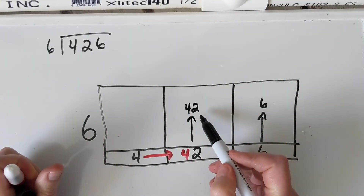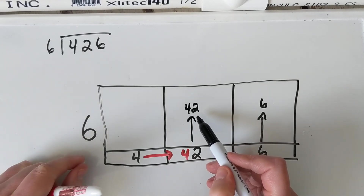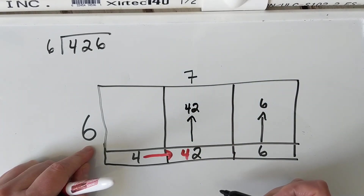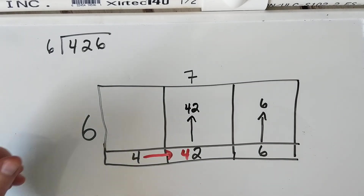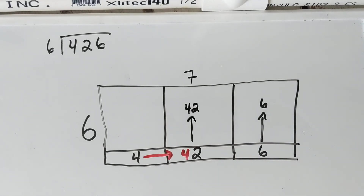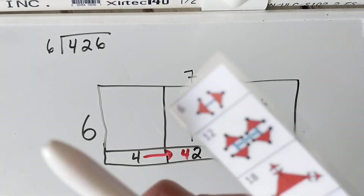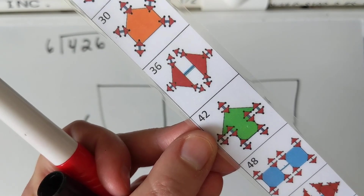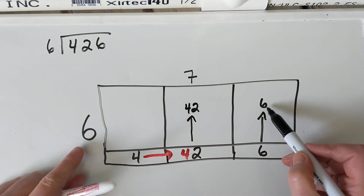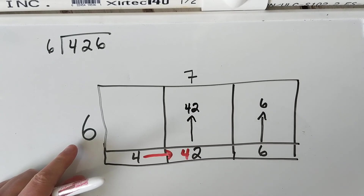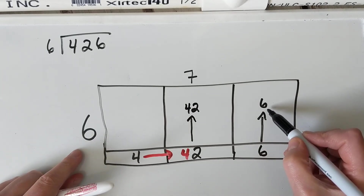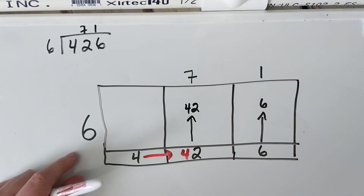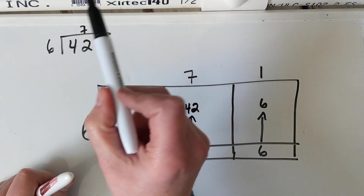Now I can go back and say: forty two — six times what gives me 42? Six times seven gives me 42. You can use your fractal multiplication if you've forgotten. I have this strip which is my six strip and I can see that six groups of seven is 42. Then I have a group of six here — how many groups of six can I make with six objects? I can make one. So my solution for this one is 71, and four hundred and twenty six divided by six is seventy one.